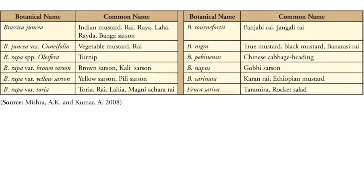Coming to the different names of Brassica species: Brassica juncea is called Indian mustard, Rai, Raya, Laha, Raida, or Banga Sarso. Brassica juncea var. cuneifolia is a vegetable mustard. Turnip is Brassica rapa ssp. oleifera. Brassica rapa var. Brown Sarson is called Brown Sarso or Kali Sarso. Brassica rapa var. Yellow Sarson is Yellow Sarso or Pili Sarso. Brassica rapa var. Toria is called Toria, Rai, Lahia, or Magni. Brassica tournefortii is Punjabi Rai or Jungli Rai.